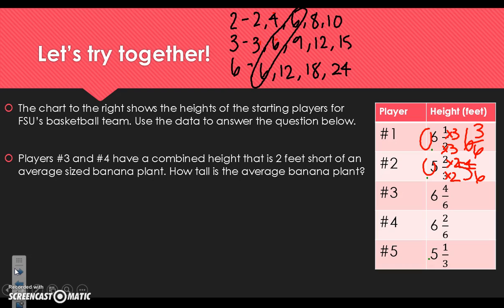Player 3 already has a denominator of 6, so it can stay the same. Player 4 already has a denominator of 6 as well. But player 5 is 5 and 1 third, so we need to make that 3 turn into a 6. 3 times 2 gives me 6, and whatever I do to the bottom I must do to the top. The whole number comes over as 5, then 3 times 2 is 6, and 2 times 1 is 2. Let's double check: we have 6 and 3 sixths, 5 and 4 sixths, 6 and 4 sixths, 6 and 2 sixths, and 5 and 2 sixths.